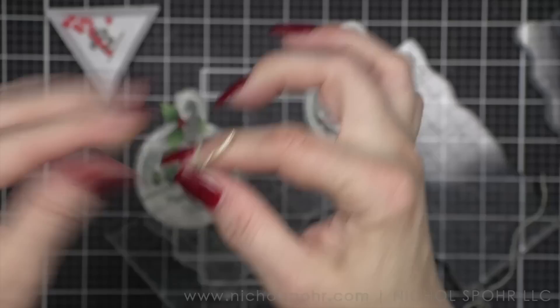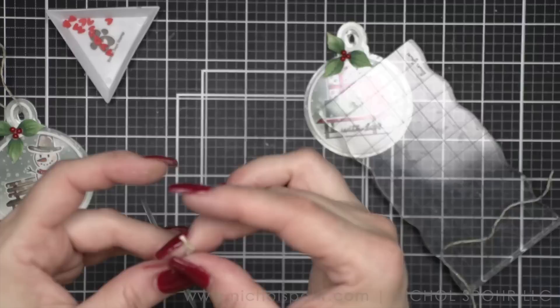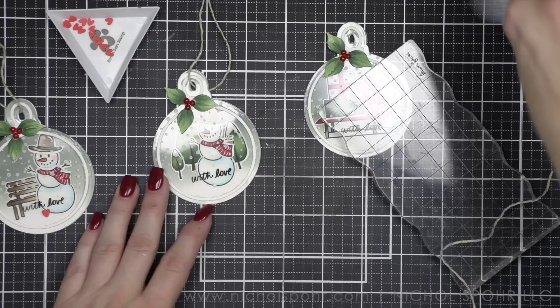We're going to finish each gift tag with some lawn trimmings twine. This is from Lawn Fawn. It's my favorite. I love using it for gift tags. Probably ninety percent of the time, this is what I use for gift tags. I love it in all of the colors. This is kind of the gold sparkle.